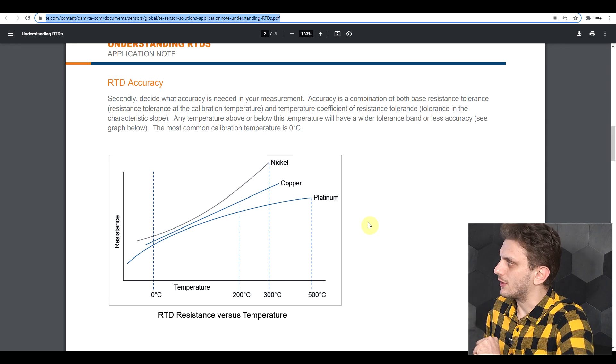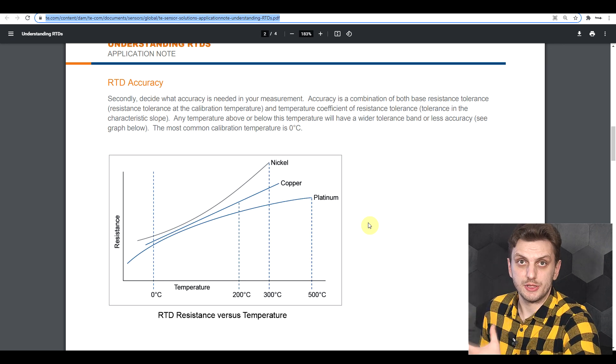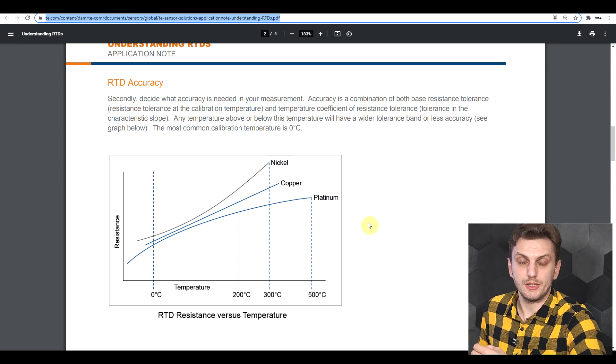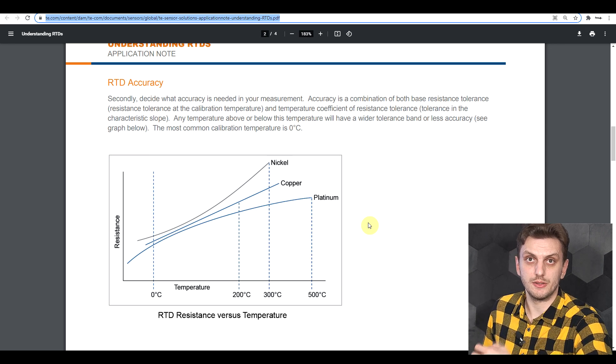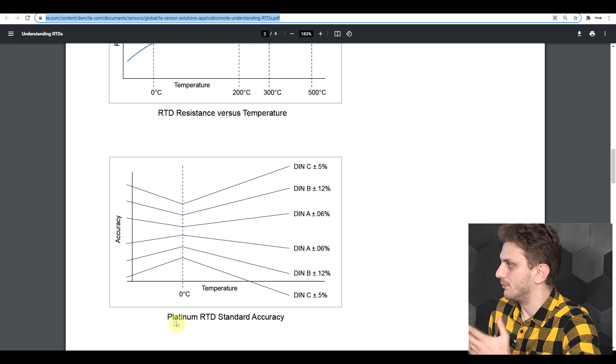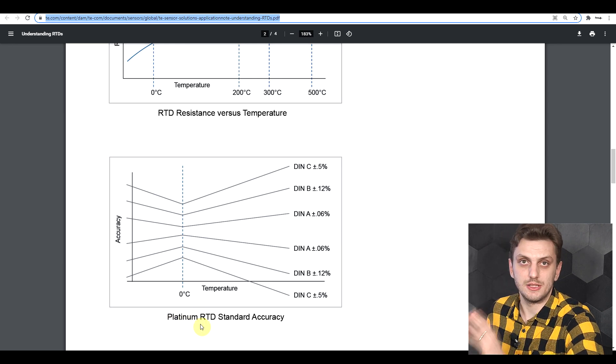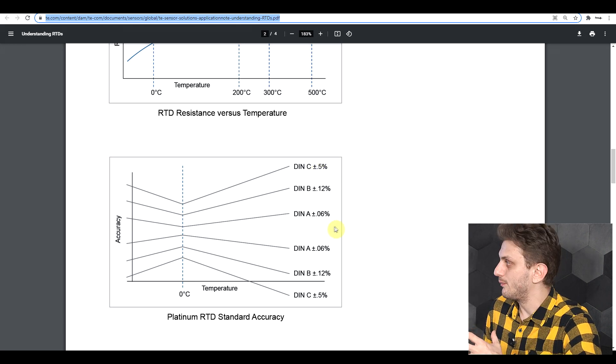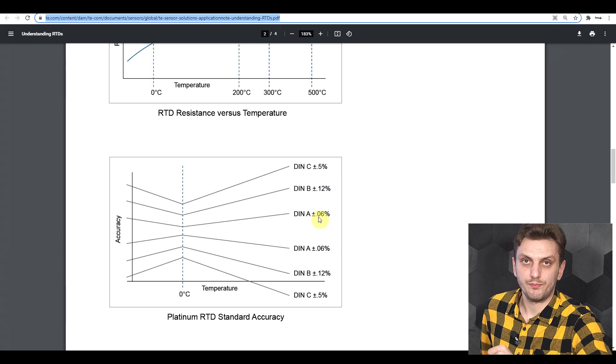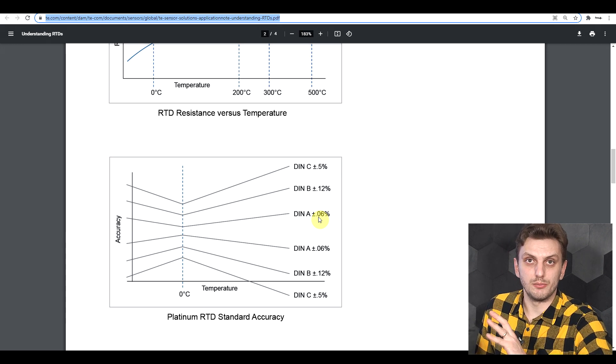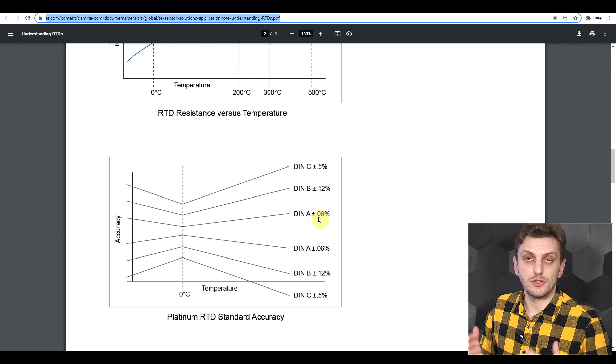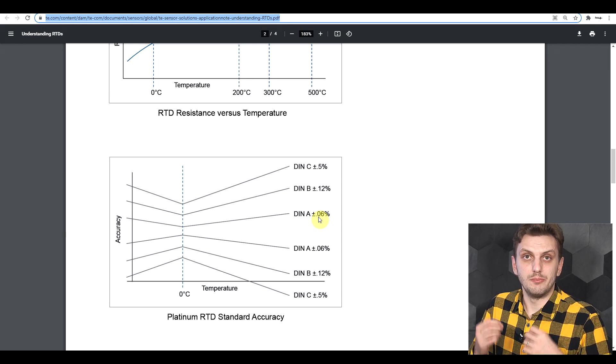The important thing about the RTD is its accuracy and its precision. Compared to the other two methods that we will be looking at today, the RTD is considered the most accurate and precise temperature measurement method. The common accuracy grades listed for your platinum RTD, the most common type of RTD, range from 0.5 percent down to 0.06 percent. This is a completely different ball game compared to the 3 or 5 percent of an NTC.